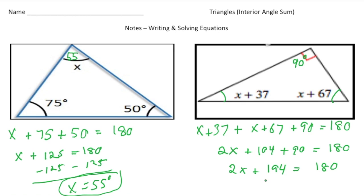Now I'm going to take away 194 from both sides. So now we have 2x equals negative 14. And last but not least, when I divide both sides by 2, I'm going to get x equals negative 7.